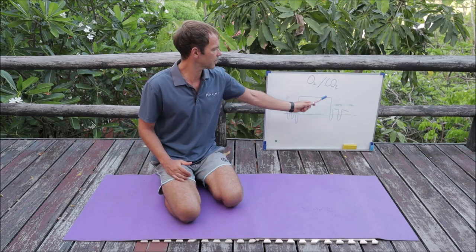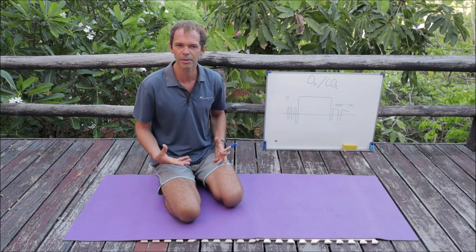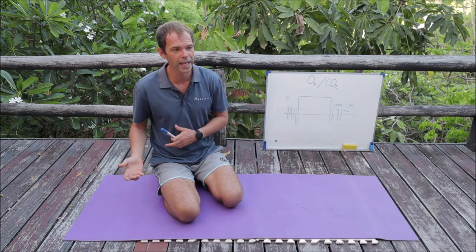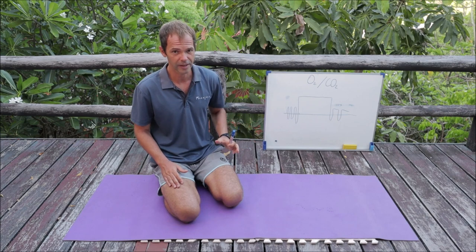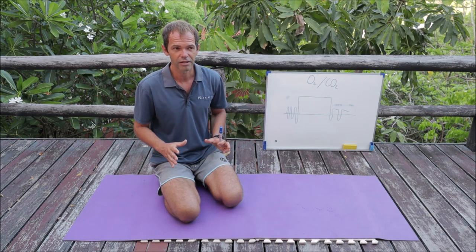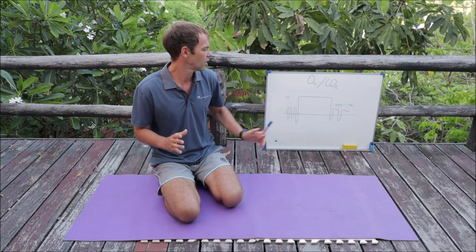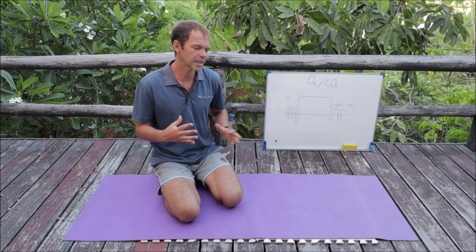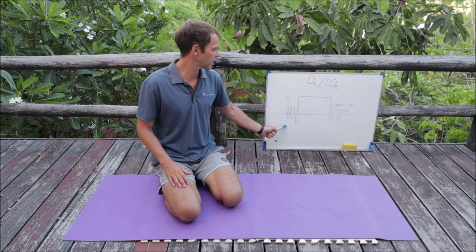Let's start discussing what we do even before we have the urge to breathe. This is how any breath hold looks like — it doesn't matter if you do a static breath hold, a dynamic breath hold, apnea walking, or diving. This is the general structure of a breath hold. There are some variations for more advanced students where some parts can be missed, but in general, we start with step number one.